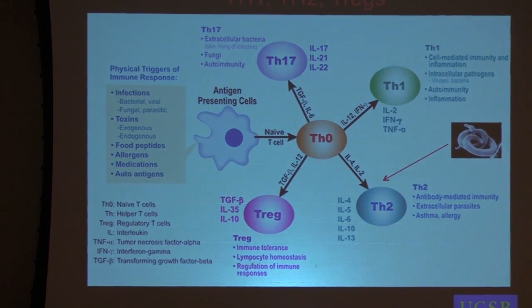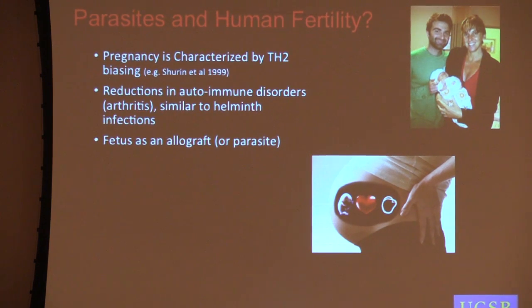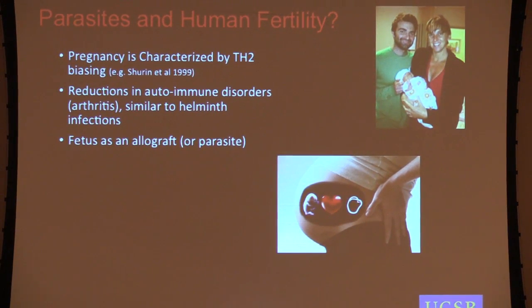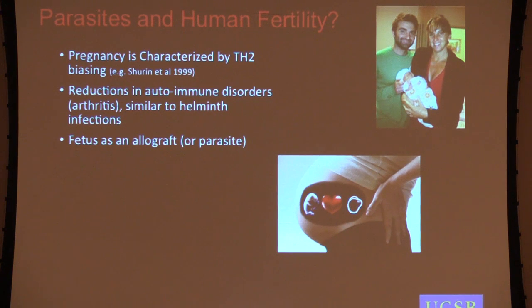Why is this interesting? Well, there's another parasite that also causes immunity to shift towards a Th2-type phenotype — and that's the human fetus. Pregnancy is characterized by Th2-biasing as well, as well as some reductions in autoimmune disorders, things similar to some of the effects you see with helminth infections. This Th2-biasing is thought to be related to preventing the mother from rejecting the fetus, which is immunologically distinct from the mother, and there's evidence this is necessary to prevent rejection of the pregnancy.